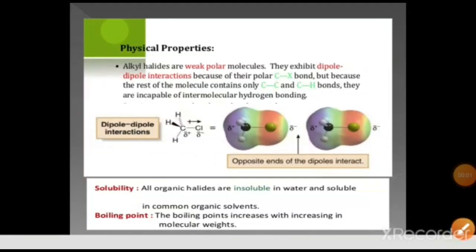The properties of alkyl halides arise from the electronegativity difference between carbon and halogens, which creates polarity in the C–X bond. Alkyl halides are weakly polar molecules with dipole interactions, but because the rest of the molecule contains carbon and hydrogen, they are incapable of intermolecular hydrogen bonding. These compounds are insoluble in water and soluble in common organic solvents. Their melting and boiling points increase with increasing molecular weight, and their dipole interactions raise their boiling points further.